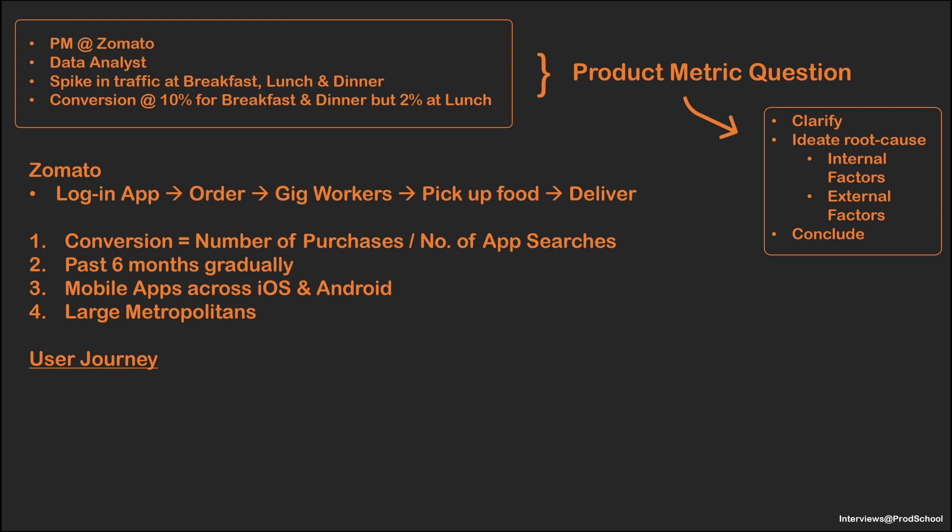Step one is search and discovery, where users open the application and can search with different attributes — for example, restaurants, dish type, cuisine, etc. Second, once the user likes something, they add items to the cart and make a purchase, factoring in delivery time, cost, and coupon discounts available. Step three is payment, where the user selects one of the payment options available. I would like to analyze the conversion contributor metrics associated with these three stages and compare them across meal times to identify any discrepancies.